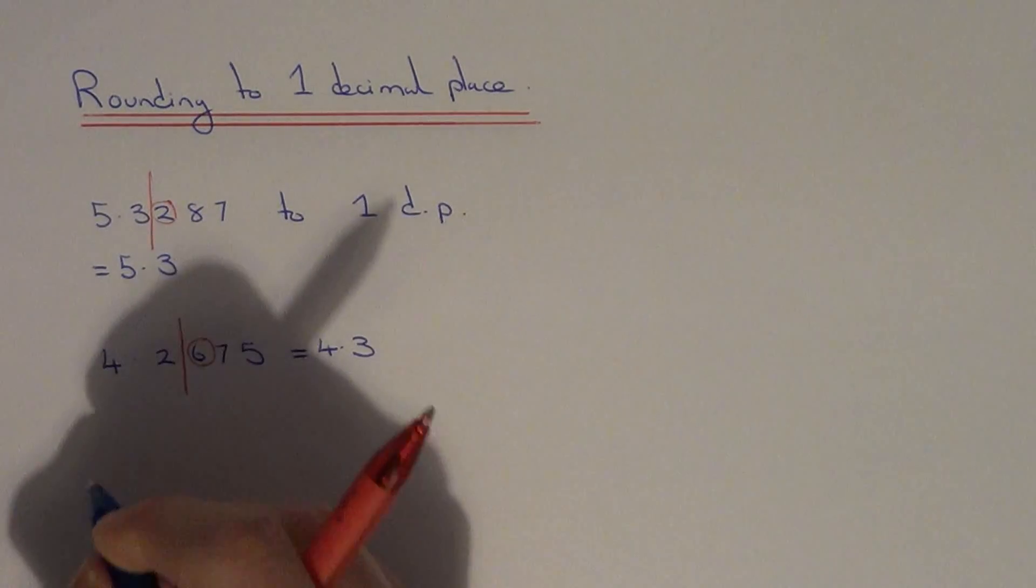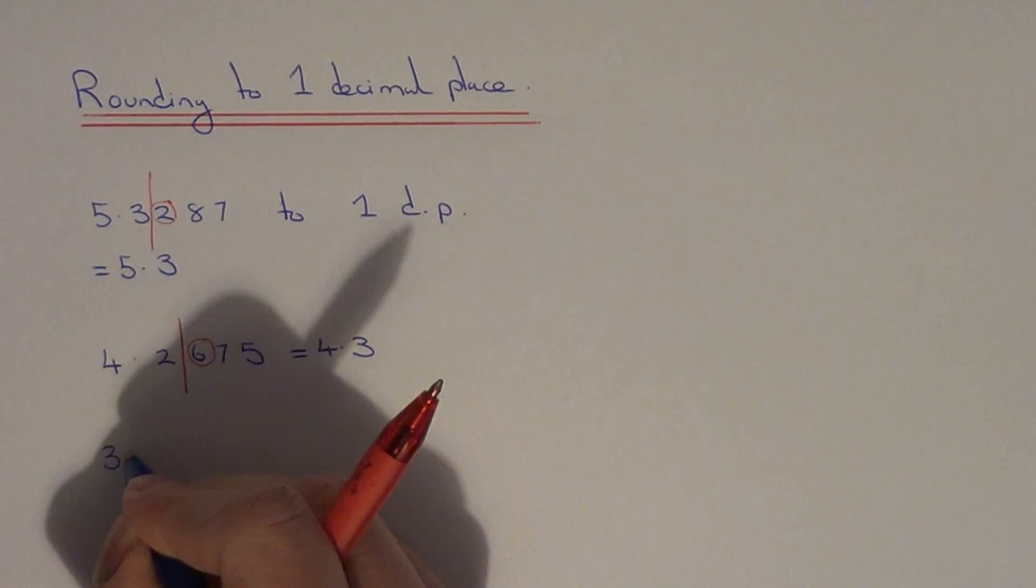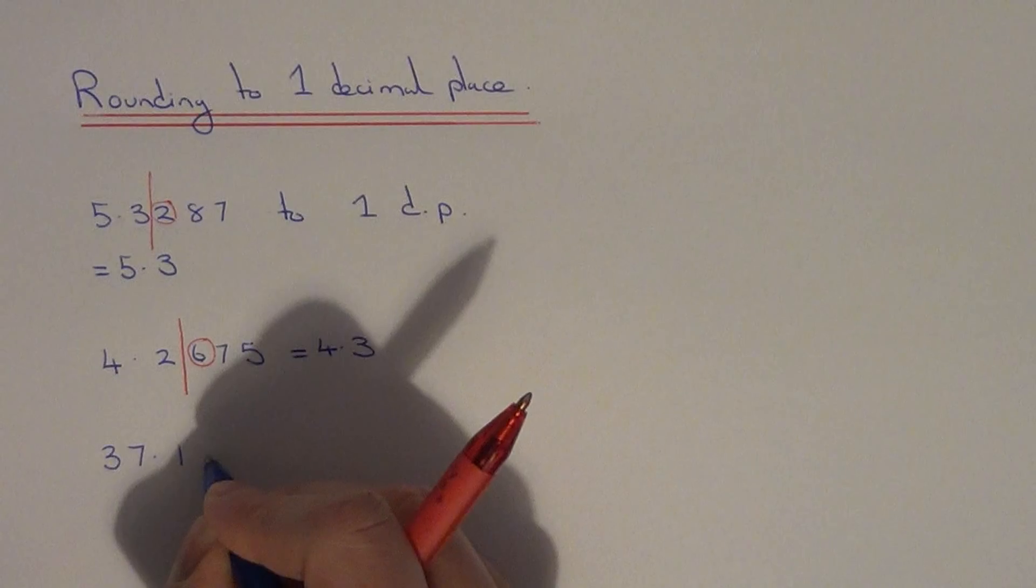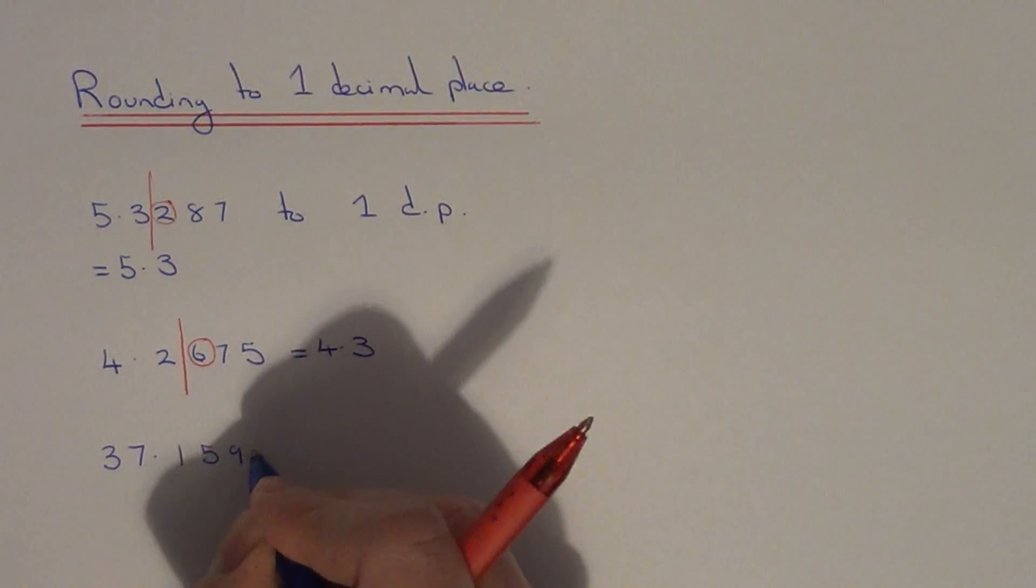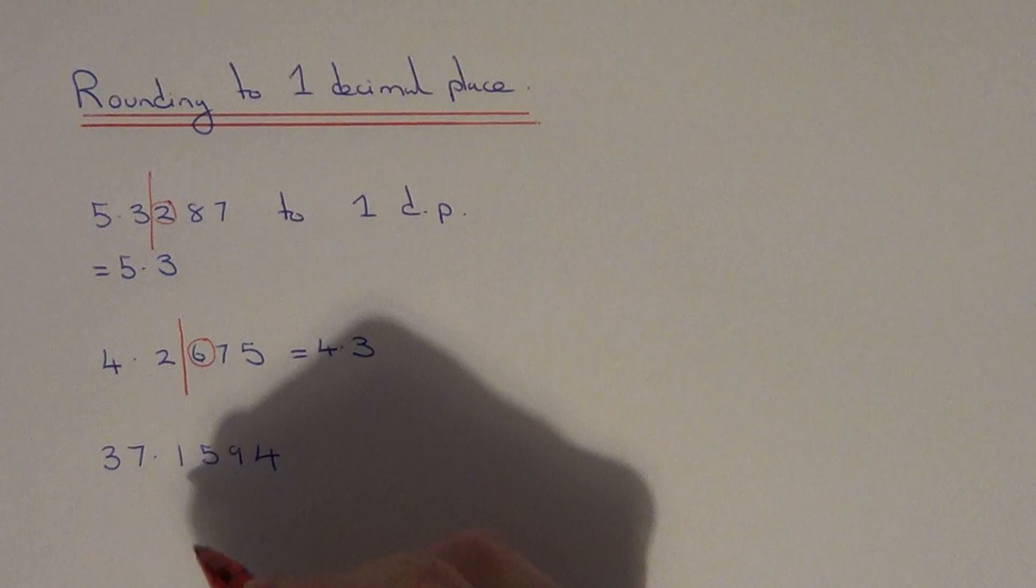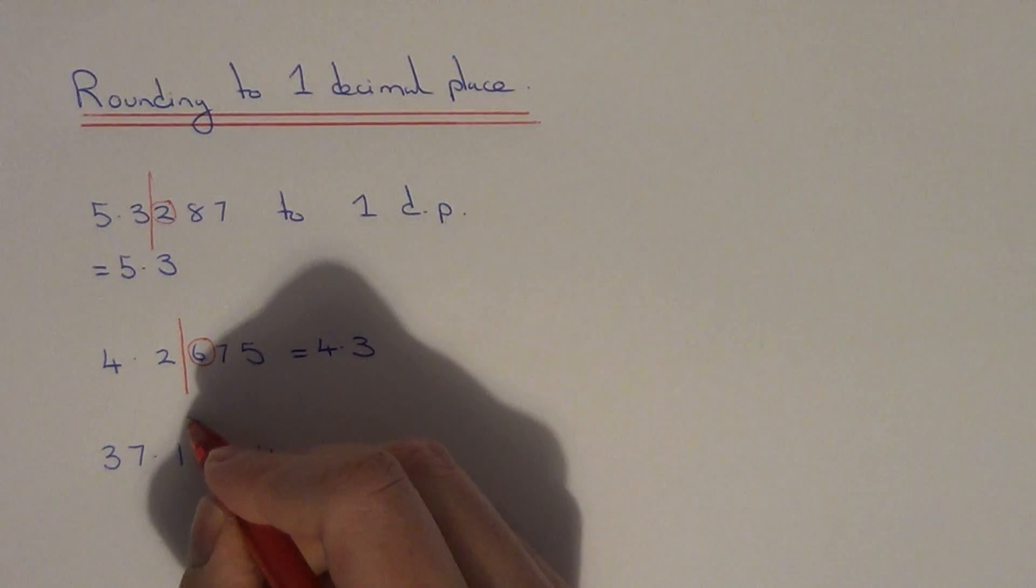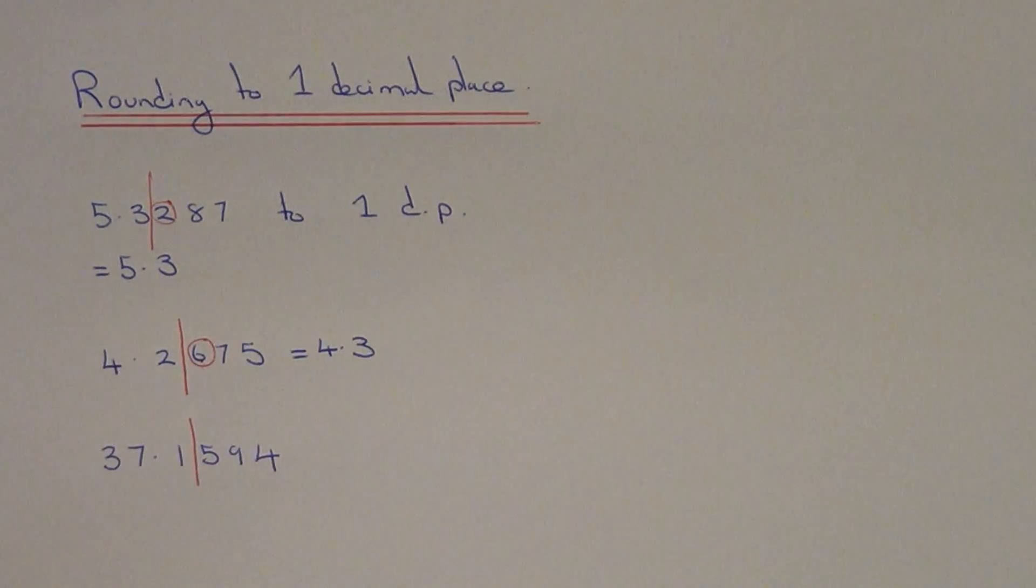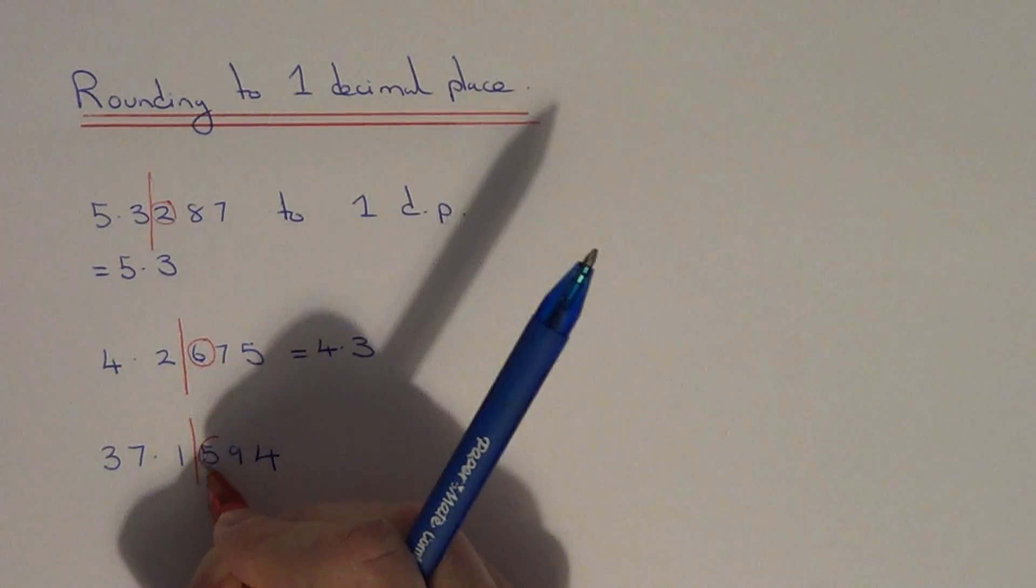Let's do another one. This time let's go with 37.1594. Again, all we need to do is put our line one number after the decimal point. Our two options are 37.1 if we round it down, or 37.2 if we round it up. Look at the number after the line.